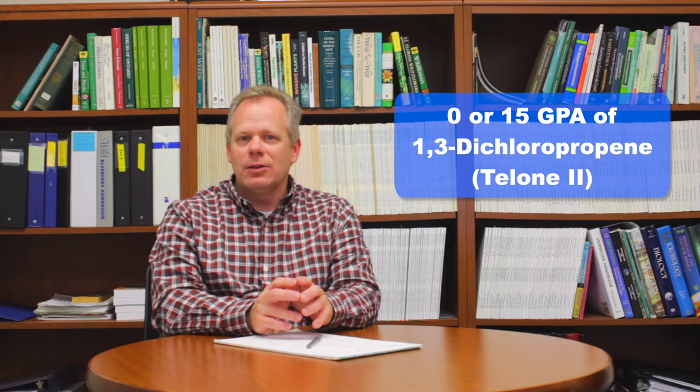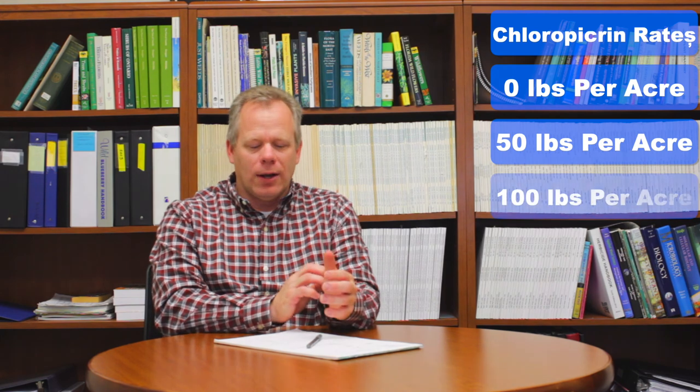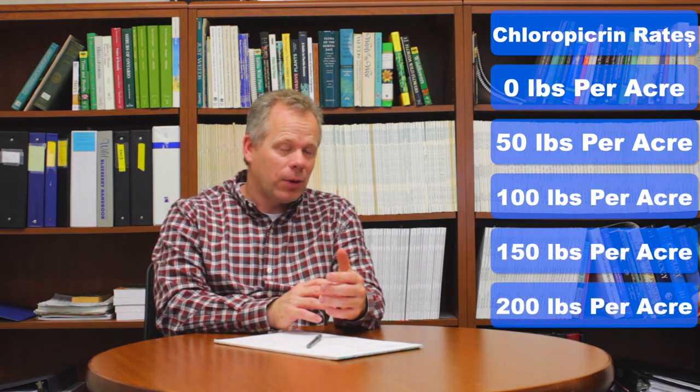The second trial looked at different rates of 1,3-dichloropropene — which I'll call Telone for the rest of this presentation — as well as different rates of chloropicrin. The fumigation setup was the same as before, but each treatment either had 0 or 15 gallons per acre of Telone II, and within each of those Telone rates, we had 0, 50, 100, 150, or 200 pounds per acre of chloropicrin, with every possible combination including a non-treated control.